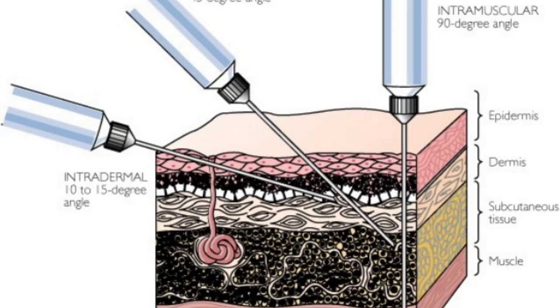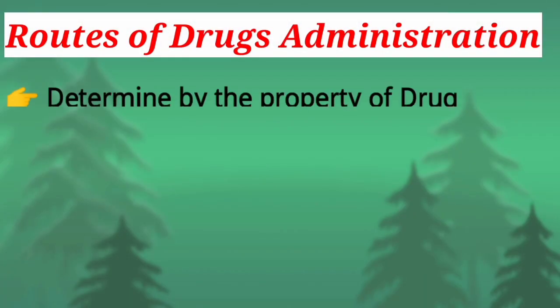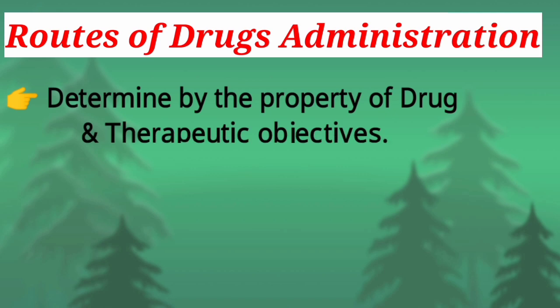Today I am going to talk about the routes of drug administration. Routes of drug administration mean the way by which a drug should be delivered to the body. The routes are determined by two factors: one is the property of the drug, and the other is the therapeutic objectives of the drug.